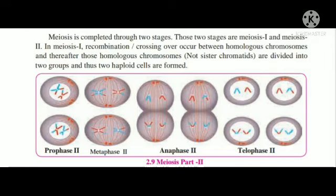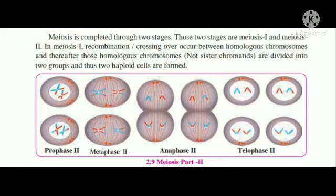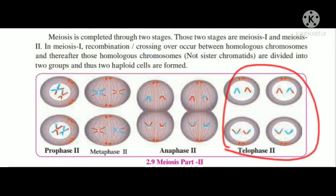Looking at the diagram, you will observe prophase second, metaphase second, anaphase second, and telophase second. In metaphase second the cells from part one proceed through to telophase second, and in telophase second stage the divided cells become visible as individual haploid cells are formed, as shown in this diagram.